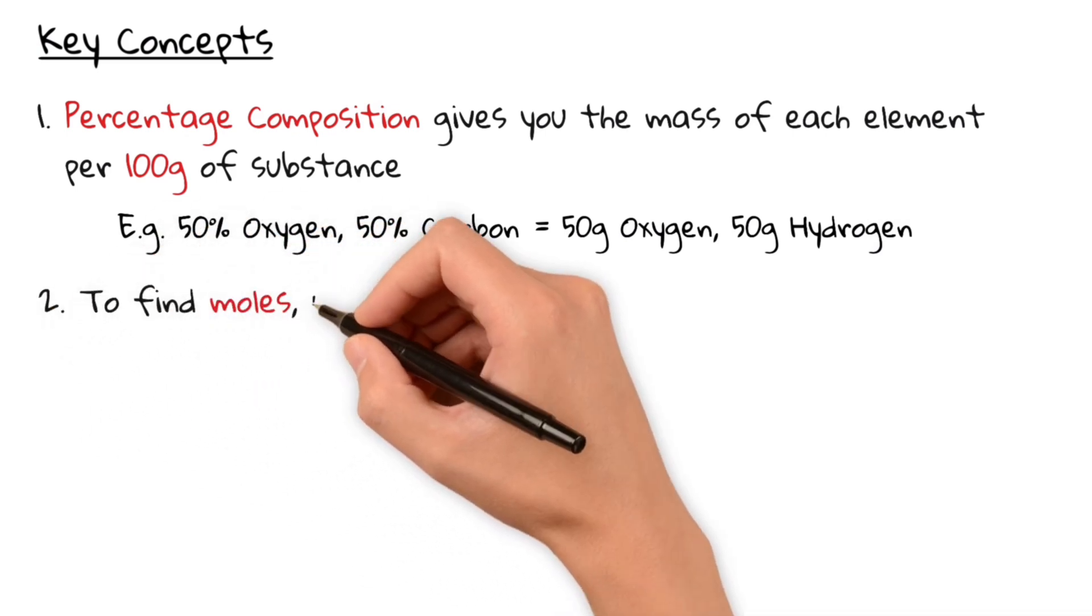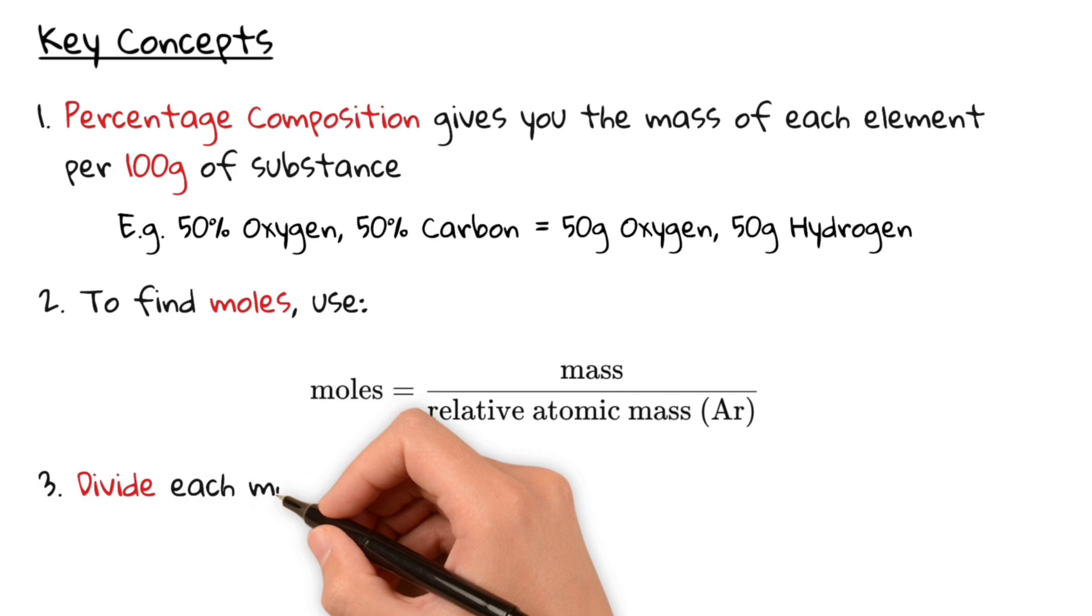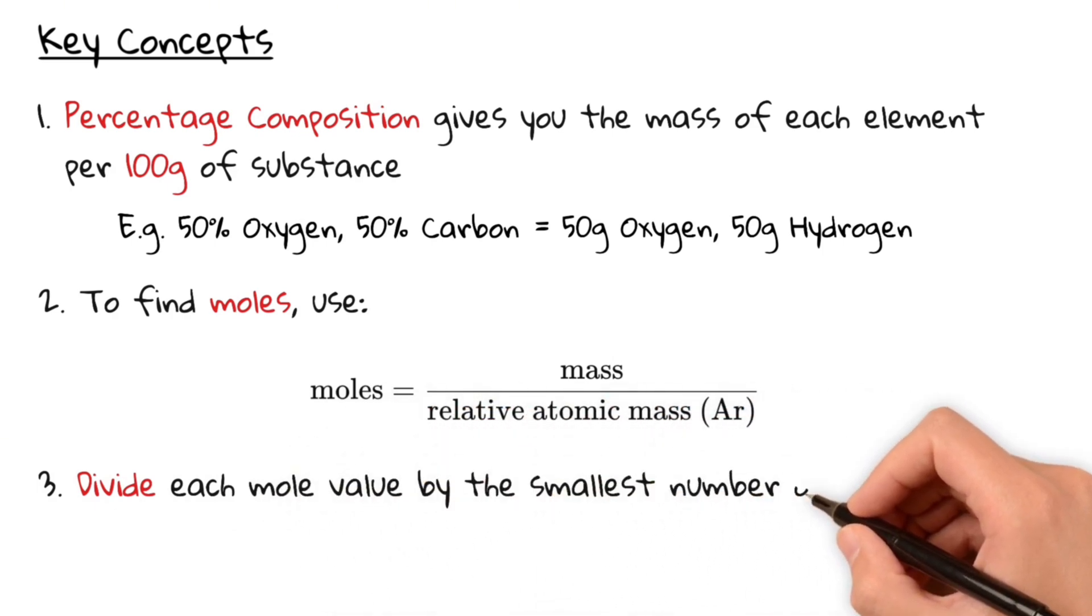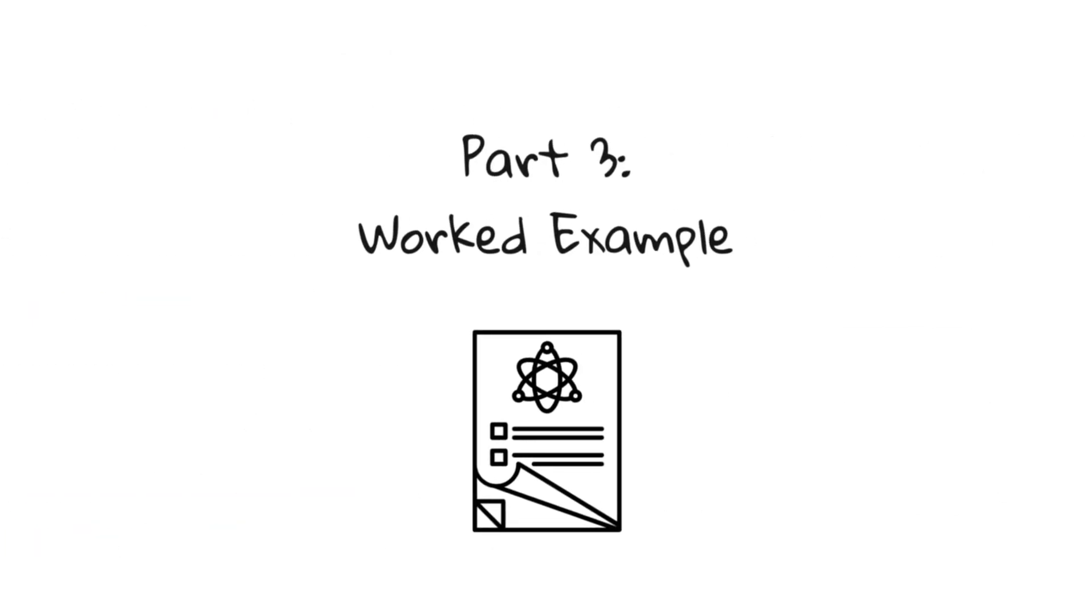Secondly, to find moles, you use the following formula. Moles equals mass divided by relative atomic mass. And lastly, divide each mole value by the smallest number of moles to find the simplest whole number ratio. Sounds complicated? Don't worry, let's look at an example.